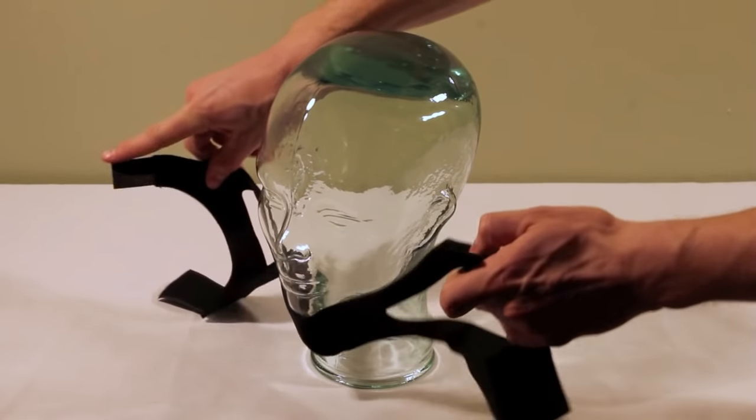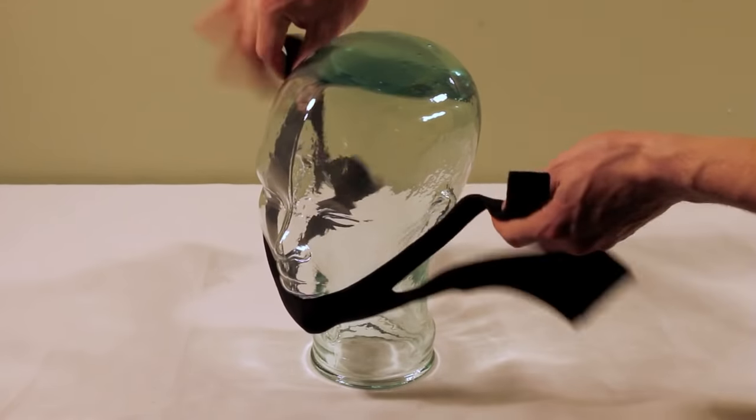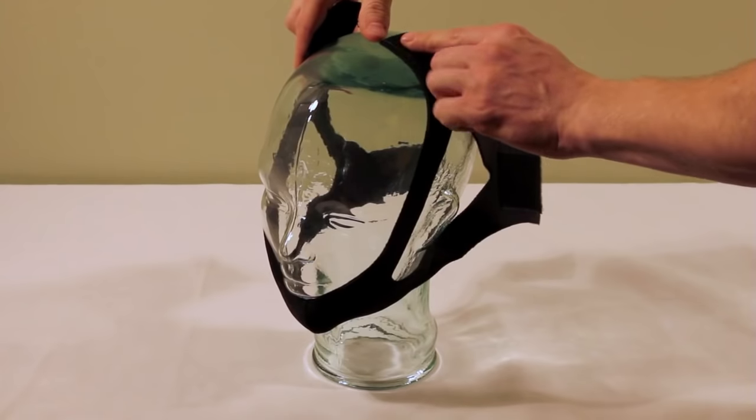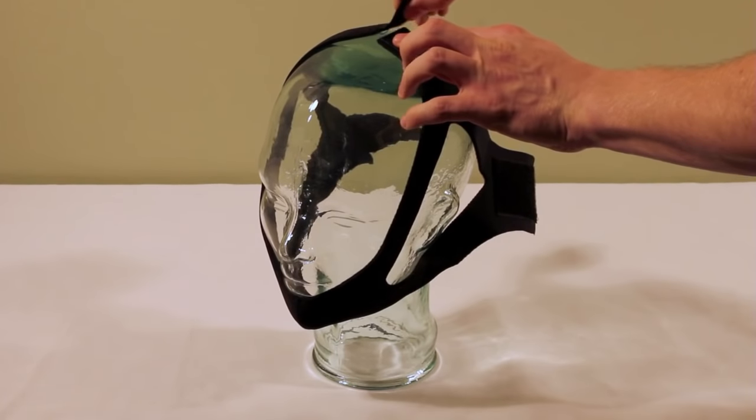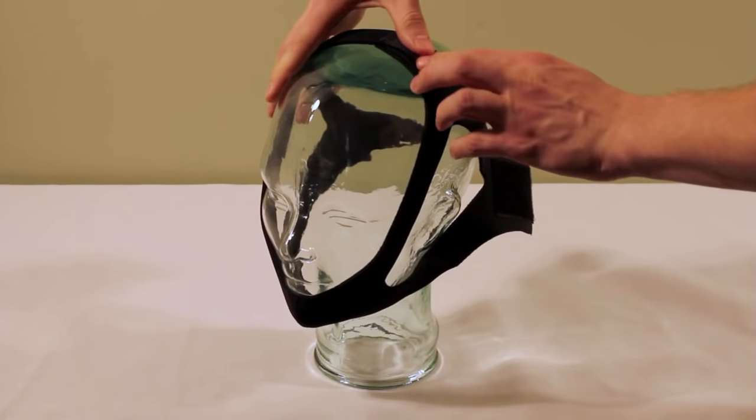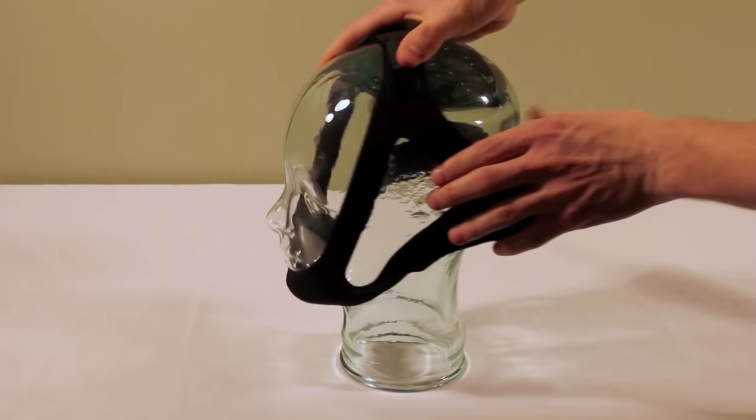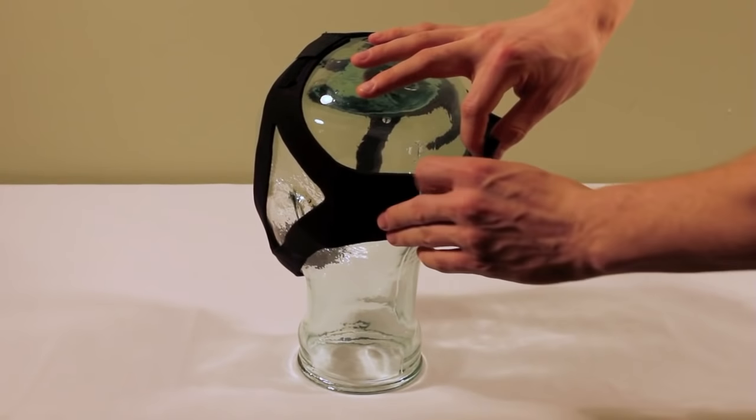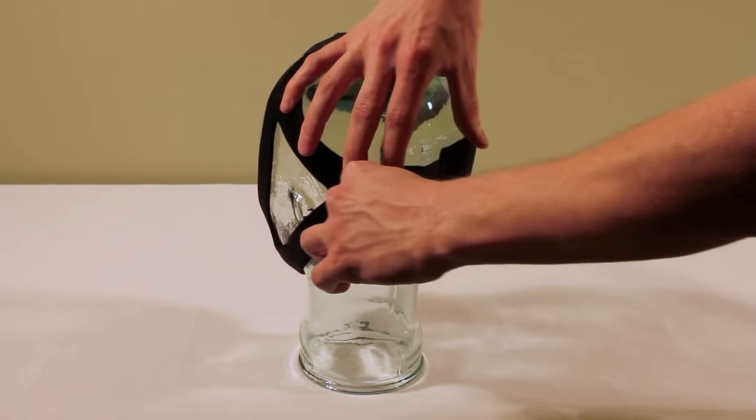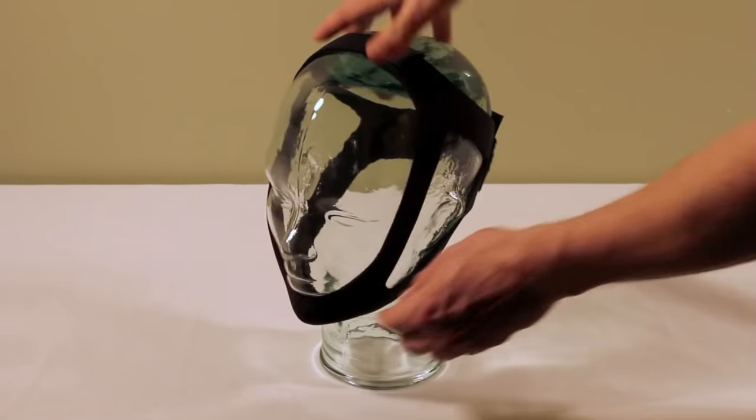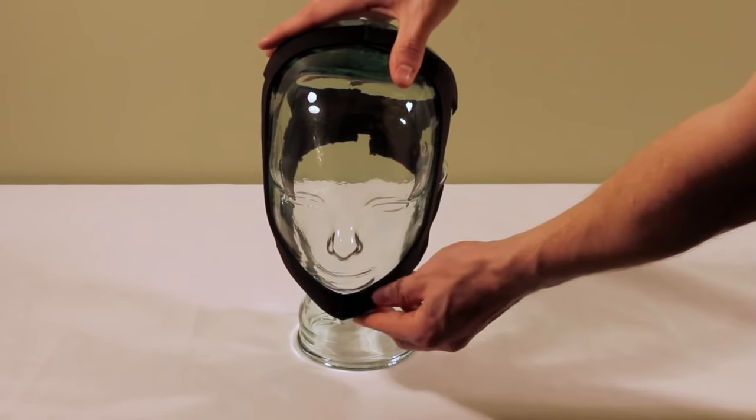You are then going to put the curved portion around the patient's chin and velcro the thin straps on the top of the head first, then moving back and velcroing the thicker straps in the back of the head and make sure that the chin is secure.